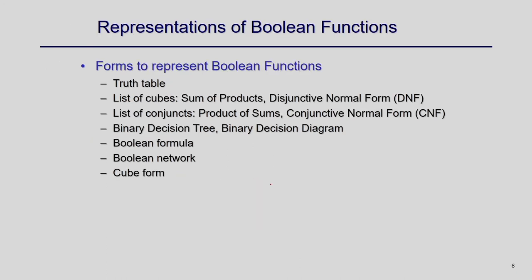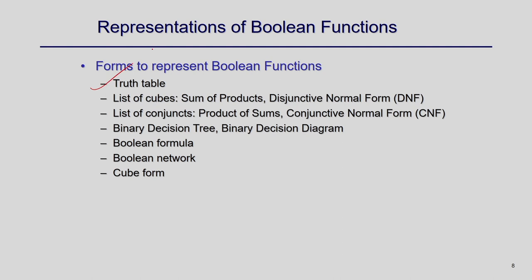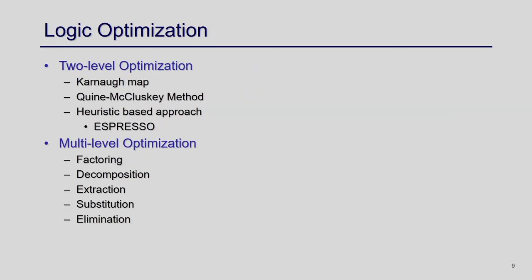To do logic optimization, you need some representation of the combinational circuit — essentially a Boolean function. There are many representations available: truth tables, sum-of-product or product-of-sum (list of cubes), binary decision diagrams (BDD), Boolean formulas, Boolean networks, and hypercube forms. Based on your algorithm you can take some form. There are two kinds of optimizations: two-level optimization and multi-level optimization.